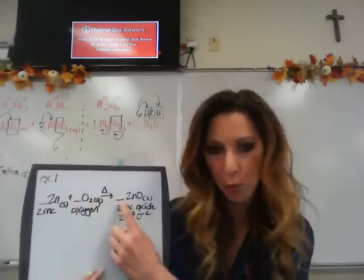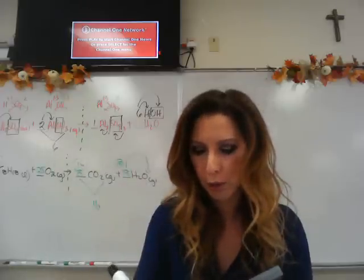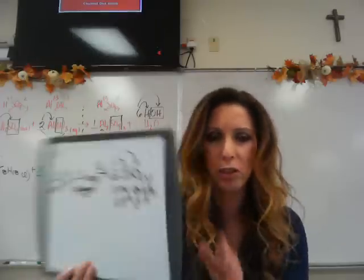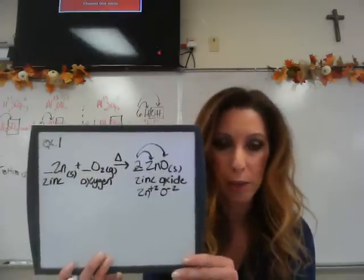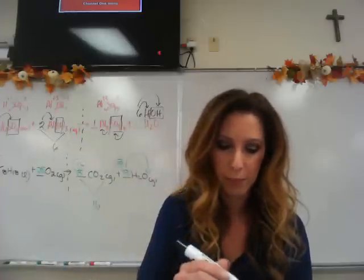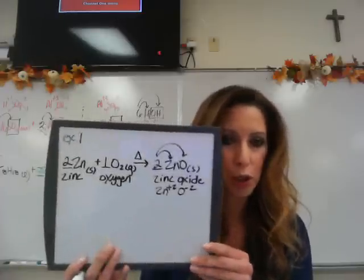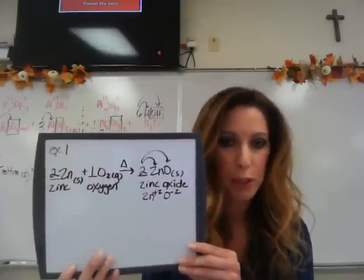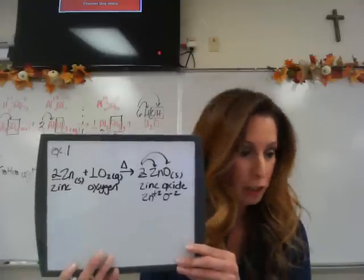There are 2 oxygen here, so you need to put a 2 here in front of ZnO. So you're going to put a 2 there. The 2 gets distributed to the Zn and the O, which means you have to put a 2 in front of Zn as well. And there's a 1 in front of O2, and now you're done. You just predicted the product of a combination reaction.